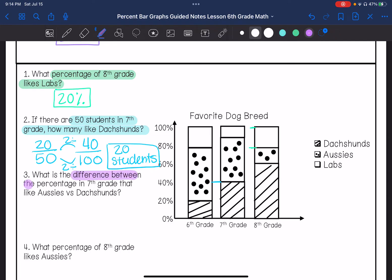What is the difference between the percentage in seventh grade that likes Aussies versus Dachshunds? I know that in seventh grade, 40% like Dachshunds, and then Aussies is from 40 to 70%, so that is 30%, so the difference between 40% and 30% is 10%.